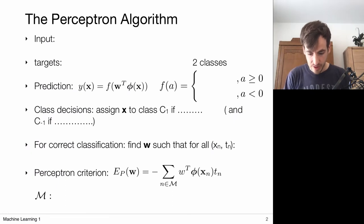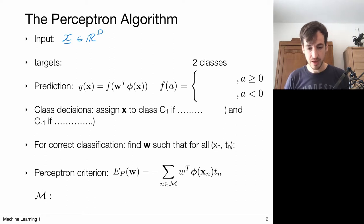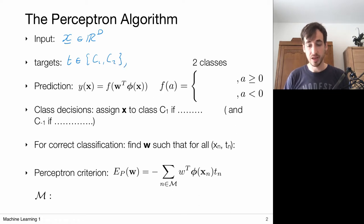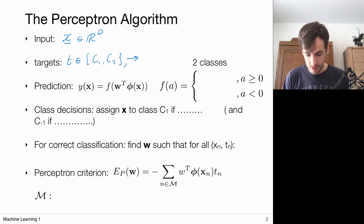The setting is as follows. We are considering input data which lies in some d-dimensional vector space, and I have targets which are binary. I'm going to pick my target out of one of two classes, and I'm actually going to encode this such that my target either takes on the value minus one or one.